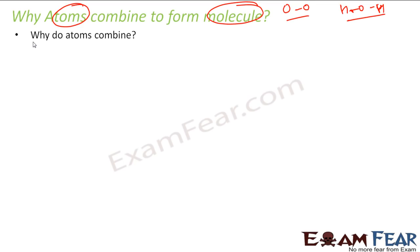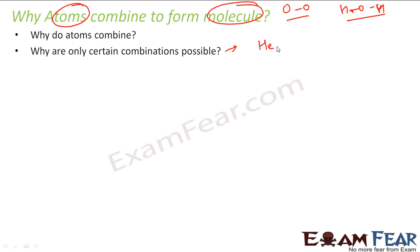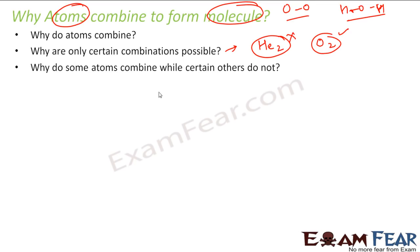There are many questions: why do some atoms combine while others don't? For example, if you react helium with hydrogen or chlorine, there won't be a reaction — but if you react hydrogen with chlorine, it will react. Some combinations are possible, some are not. We will answer all these questions as we go along.